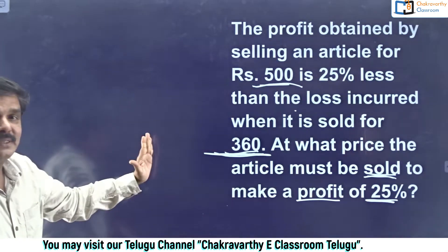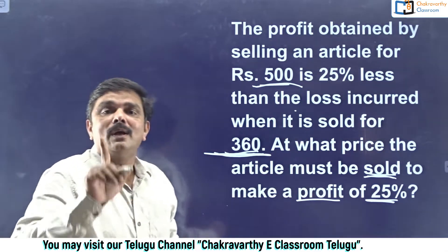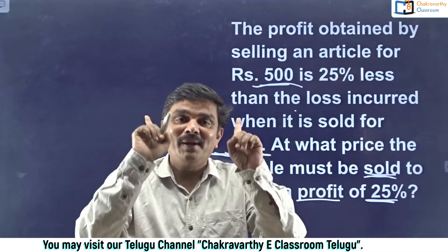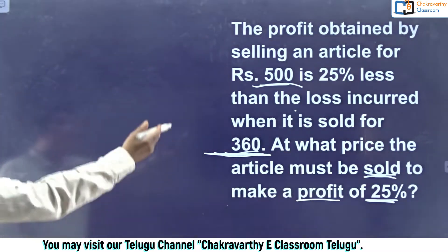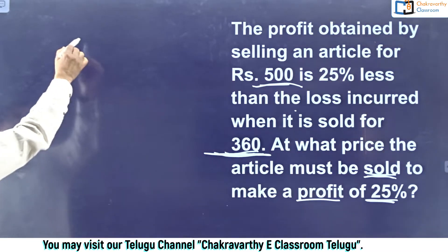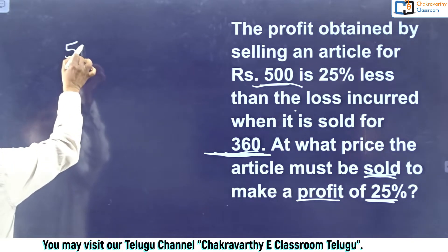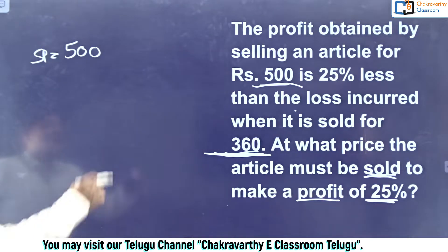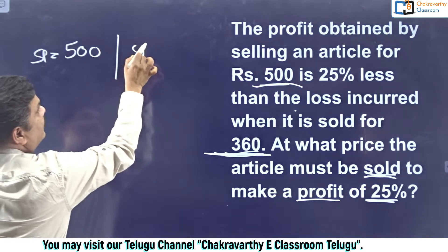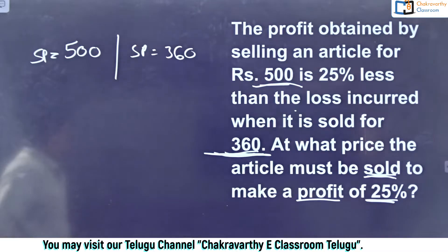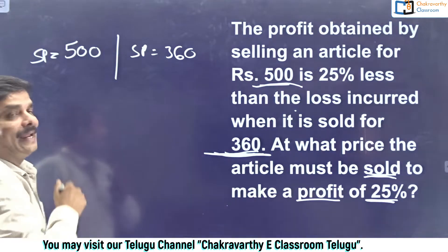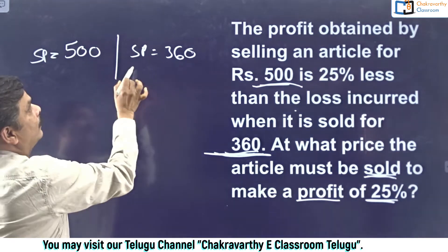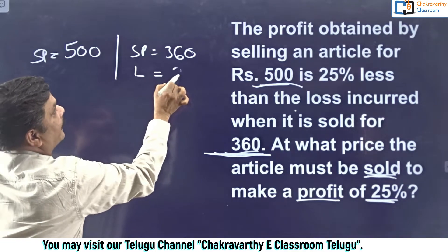Let's go for the detailed method first, and after that I'll go to the shortcut. The detailed method is for your understanding; the shortcut is for the exam. In the first case, 500 rupees is the selling price. In the other case, the selling price is 360 rupees. Now let's use algebra here. When they sell the article for 360, let us take the loss as x rupees.